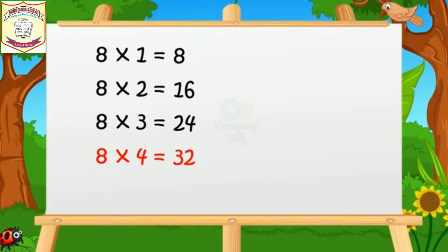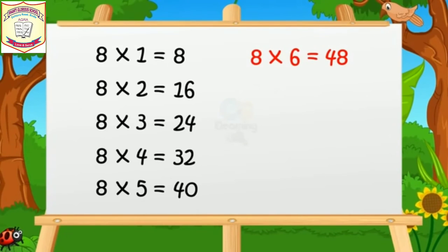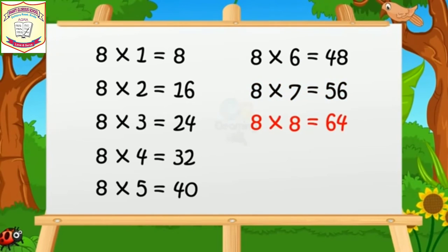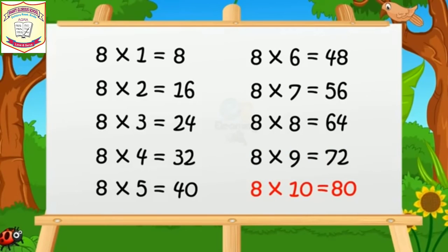Eight fives are forty. Eight sixes are forty-eight. Eight sevens are fifty-six. Eight eights are sixty-four. Eight nines are seventy-two. Eight tens are eighty.